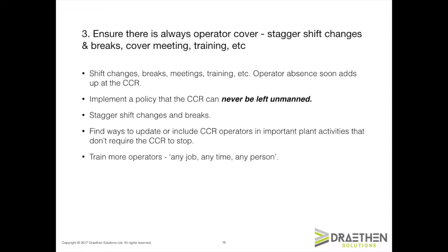This is a very easy way to increase throughput. You may need to train more operators to operate the CCR, but this should be factored into your training and development plans for the plant anyway. The 'any job, any time, any person' principle works well here. Determine who is competent to operate the CCR, grade each operator from 0 to 5 — with complete mastery at the top of the scale — and set about training more people over time to increase the numbers of competent operators and the average skill level overall. This will enable you to maintain flow at the CCR and exploit its scarce capacity.